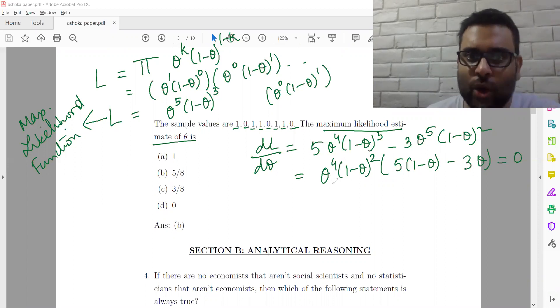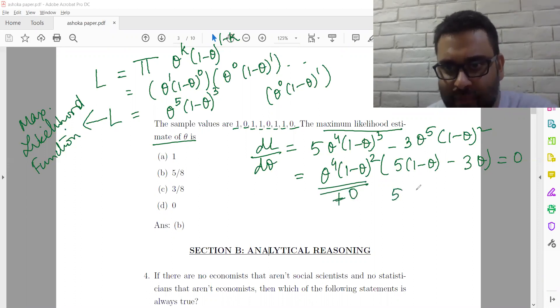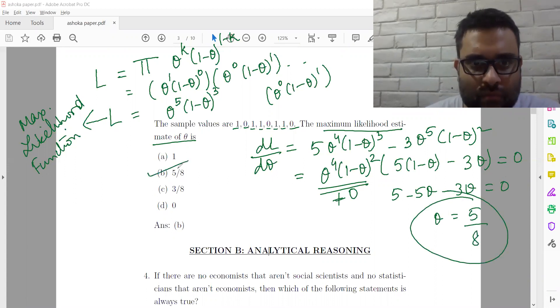Now, theta will always lie between 0 and 1. So, this part is not equal to 0. So, this part has to be equal to 0. So, 5 minus 5 theta minus 3 theta has to be equal to 0. Or the maximum likelihood estimate is 5 by 8.